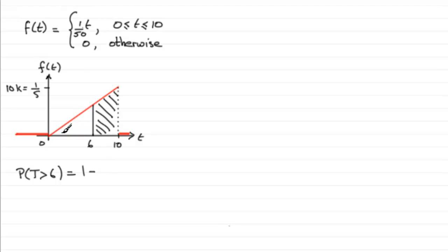So that's going to be 1 minus, and for the area of a triangle, it's the base, which is 6, times the height. The height is just putting 6 into our function: 1/50 times 6, which is 6/50. So 6 times 6/50 divided by 2, and if you work this out you get 0.64.